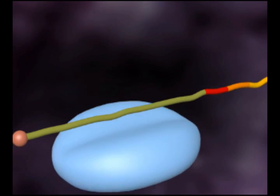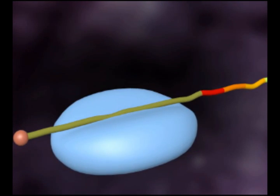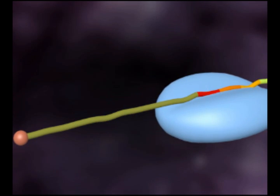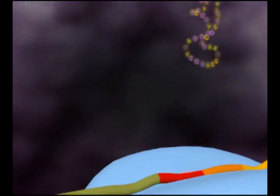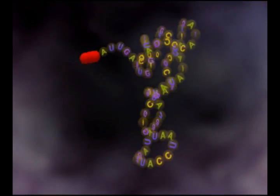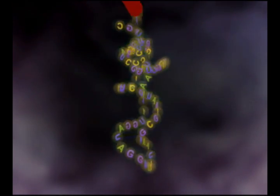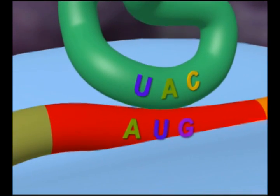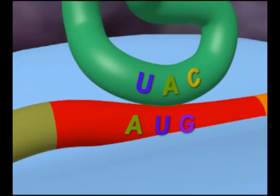A small ribosomal subunit positions itself on the mRNA molecule. Transfer RNA molecules carry specific amino acids that correspond to the tRNA anticodon. This anticodon is the code that allows the tRNA molecule to bind to the complementary mRNA codon.